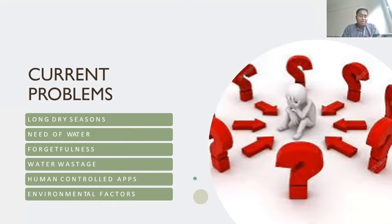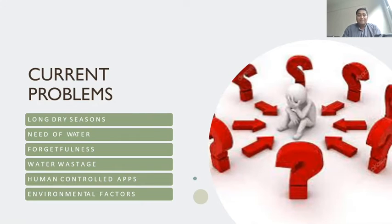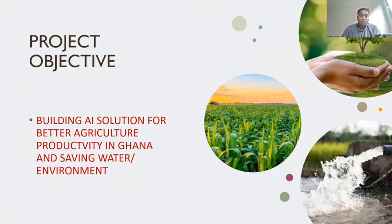The problem: Ghana is experiencing long dry seasons, increasing water demand for farmers. Existing irrigation systems are human-controlled, and humans tend to forget — leading to water wastage. Even apps that control irrigation manually require constant human input. The objective is to create better agricultural productivity and conserve water while supporting environmental sustainability.